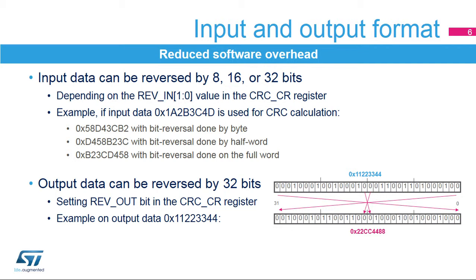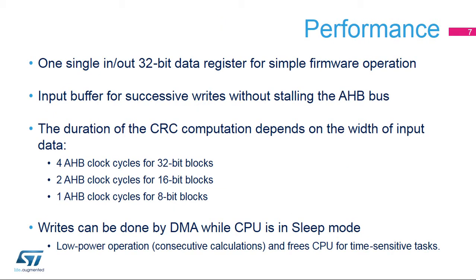The operation is done at bit level. For example, output data 0x11223344 is converted into 0x22CC4488. The CRC data register includes an output buffer which allows for immediate writes by the CPU or DMA peripheral of a second data word without waiting for any wait states due to an active CRC computation. The CRC data register can be accessed by word, right-aligned half-word, and right-aligned byte.